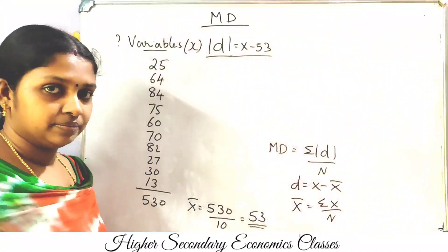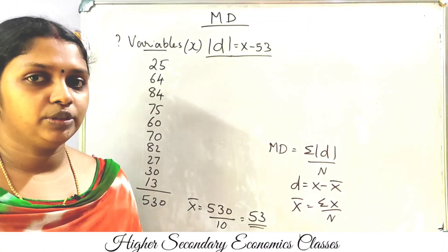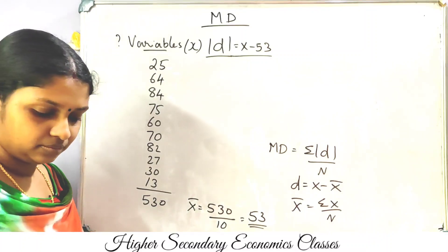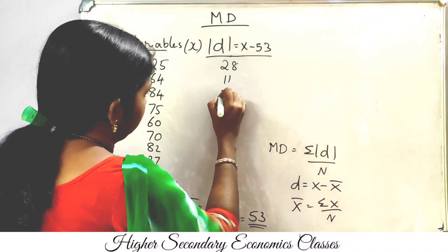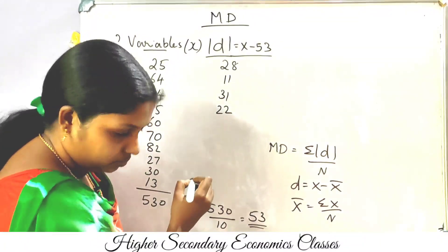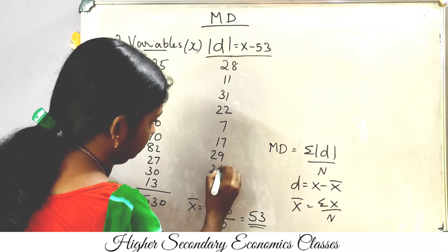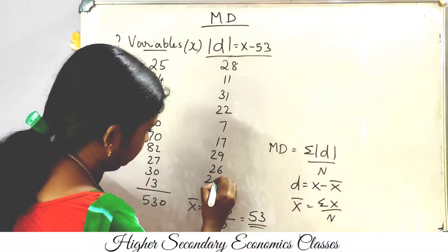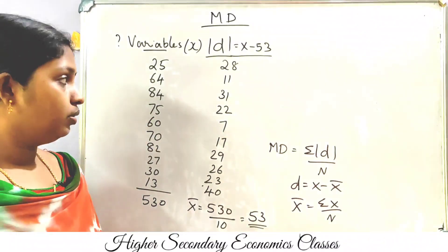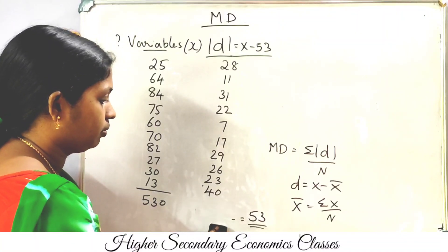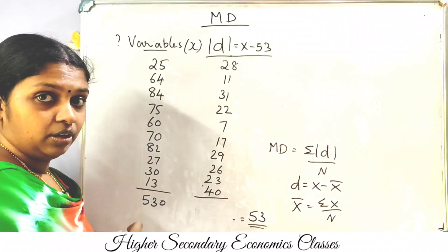So if we substitute the values for 53, modulus d equals x minus 53. When the result is negative, we consider the positive (absolute) values. We cut the values in the same way and sum them. The total of sigma modulus d comes out to 2034.